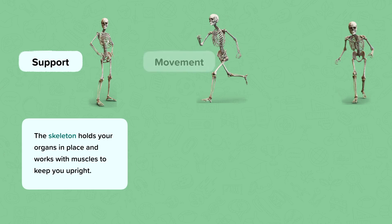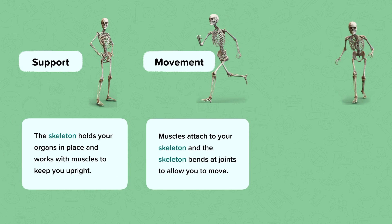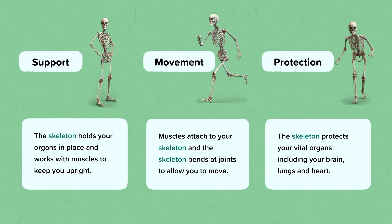The skeleton is important for movement. Muscles attach to the skeleton and the skeleton can then bend at joints to allow you to move around. Protection: the skeleton is made up of hard bones so it can protect your vital organs including your brain, your lungs and your heart.